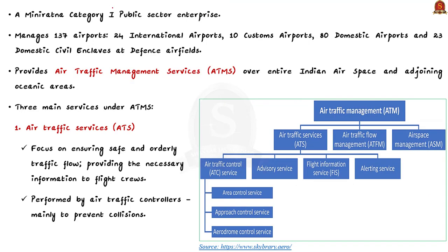Airports Authority of India is a Mini Ratna Category 1 public sector enterprise. At present, AAI manages 137 airports, which includes 24 international airports, 10 customs airports, 80 domestic airports, and 23 domestic civil enclaves at defence airfields. A civil enclave is an area allotted at an airport belonging to the armed forces. AAI also provides air navigation service over 2.8 million square nautical miles of airspace.